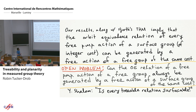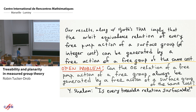Our results, together with Hjorth's theorem, imply that the orbit equivalence relation of every free PMP action of a surface group of integer cost can be generated by a free action of a free group of the same cost. An open problem I really like: can the orbit equivalence relation of a free PMP action of a free group always be generated by a free action of a surface group of the same cost? As Yehuda Shalom put it: is every treeable equivalence relation surfaceable?